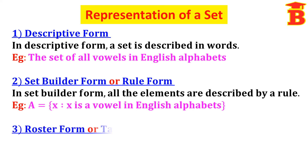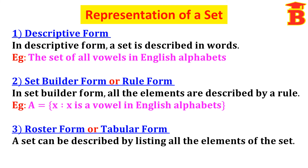The third form is roster form or tabular form. Here a set is described by listing all the elements. The same example can be written as capital A equal to, within set bracket, A, E, I, O, U. So the vowels in English alphabets can be written in three forms: descriptive form — writing in words; set builder form — described by a rule; and roster form — listing all elements. These are the three ways of representing a set.